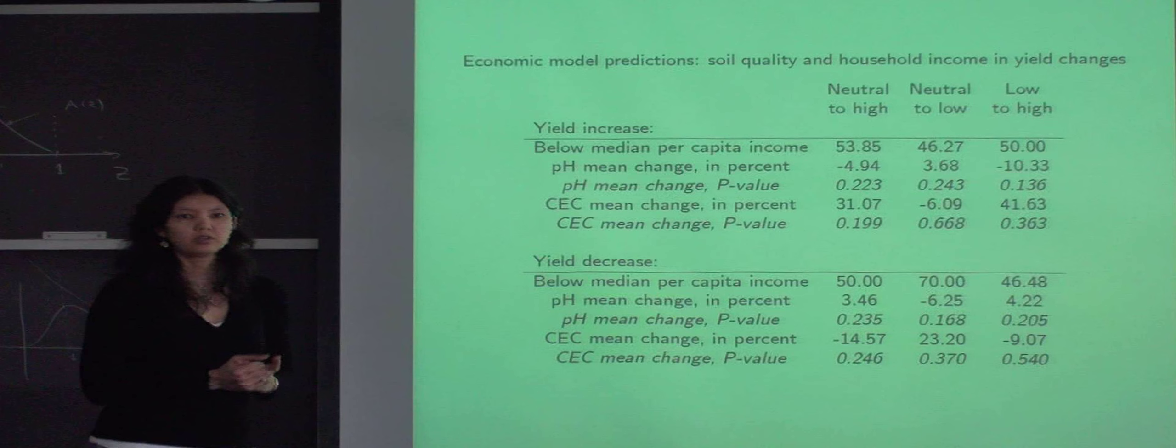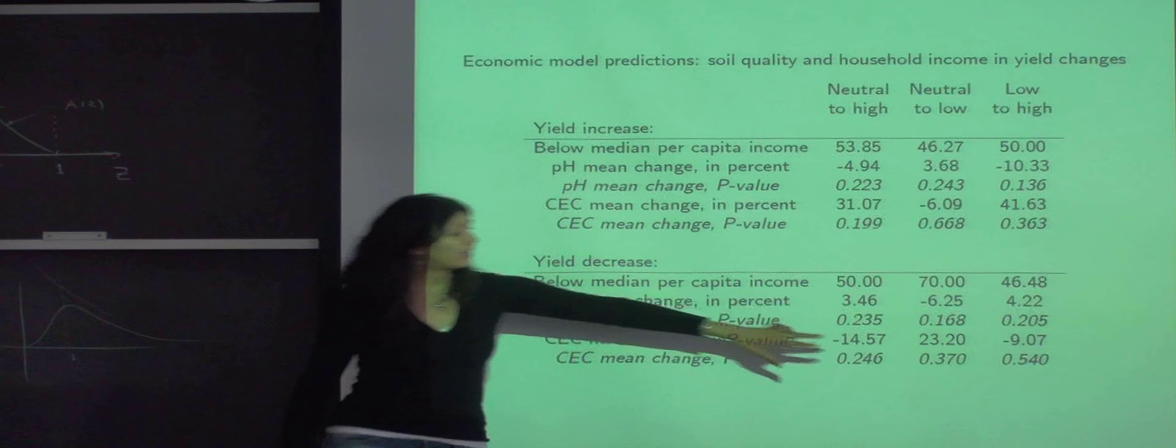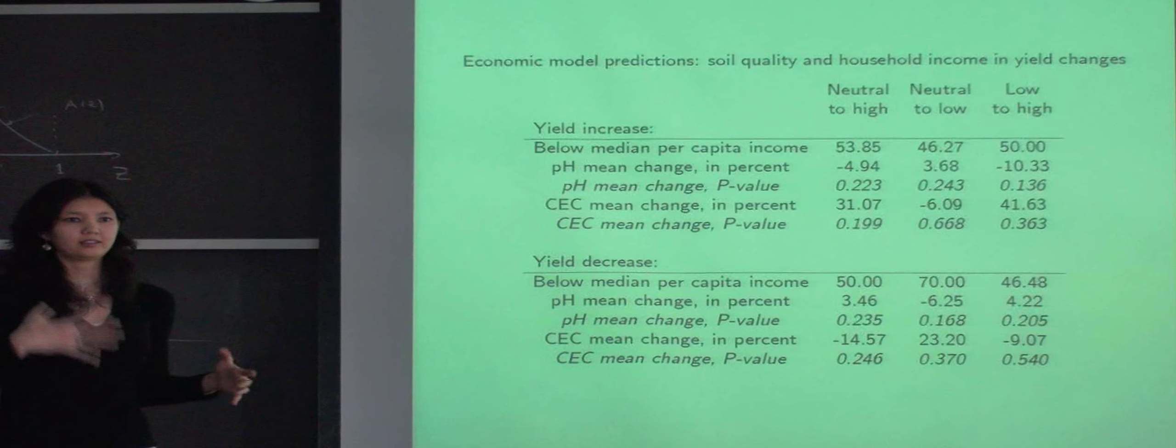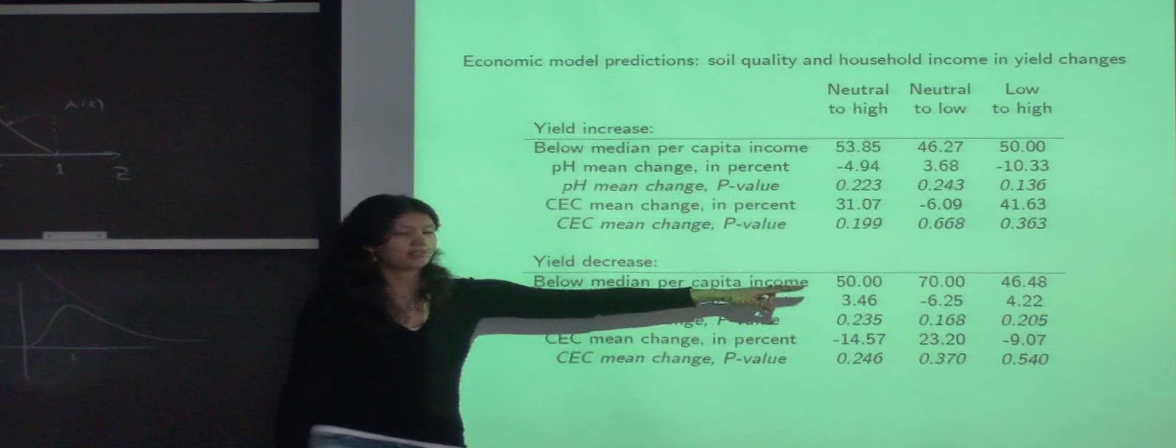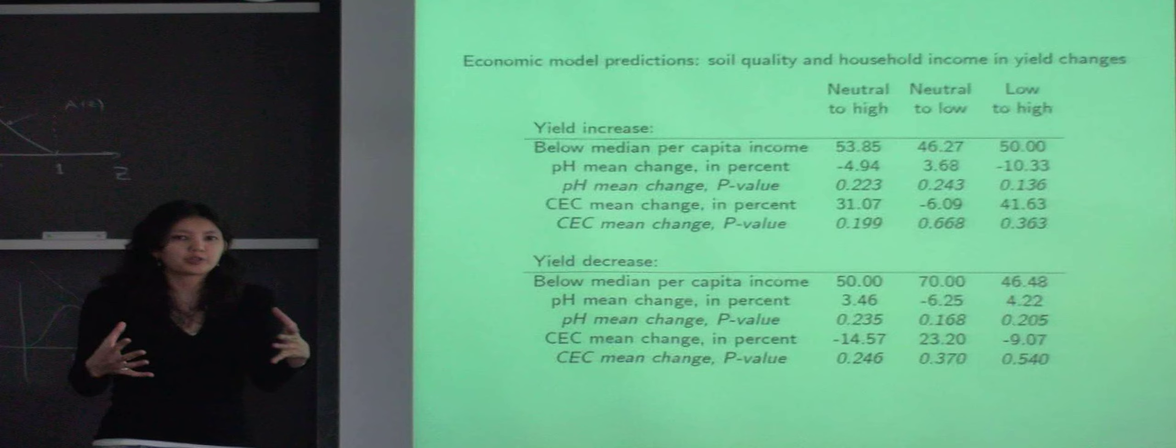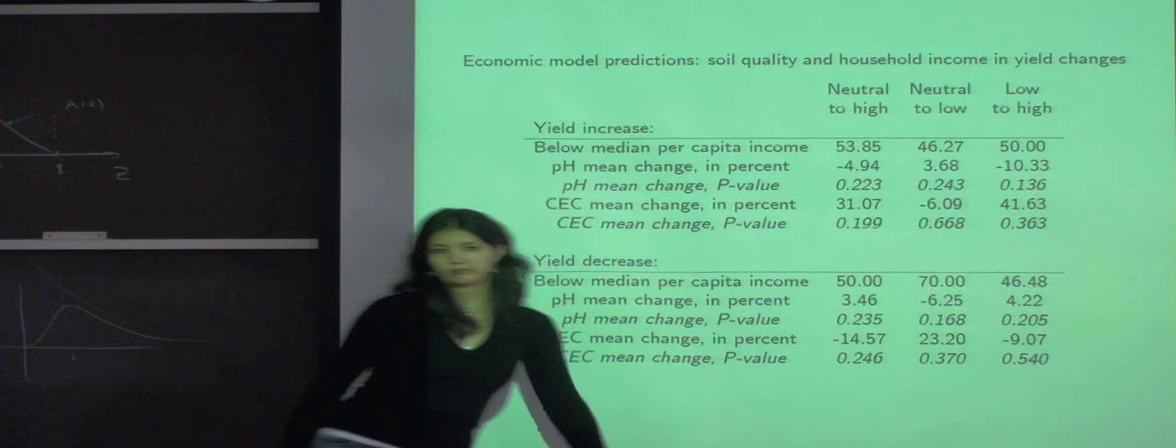So remember that according to the model predictions, under low emissions scenario, most farmers actually benefited slightly and experienced a slight increase in yields, and a small group experienced decline. So this result tells us that this small group that didn't manage to benefit in circumstances when everyone else was kind of well off, they're likely to be relatively poor.